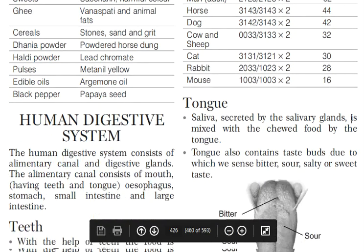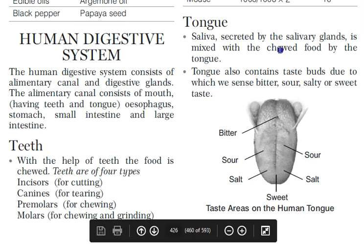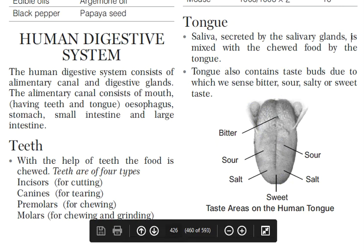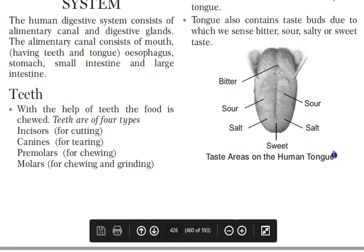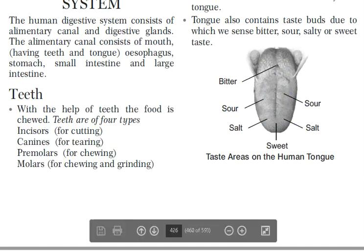The tongue mixes saliva secreted by the salivary gland with chewed food. The tongue also contains taste buds — the front part detects sweet, the sides detect salt and sour, and the back part detects bitter taste.